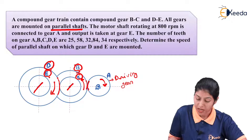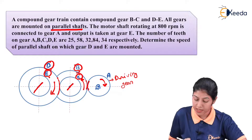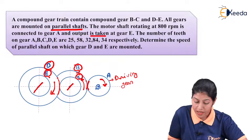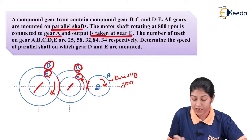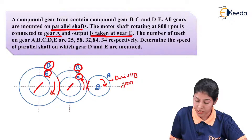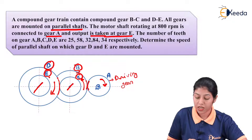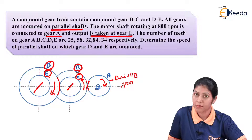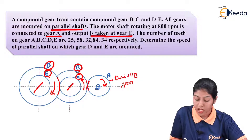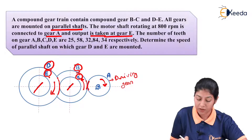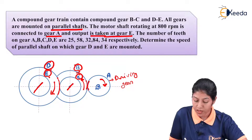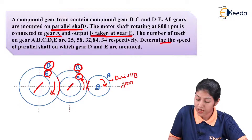The number of teeth of gear A, B, C, D and E is given. The driving gear is gear A and the driven gear is gear E. Number of teeth: TA = 25, TB = 58, TC = 32, TD = 84, TE = 34. We have to determine the speed of the parallel shaft on which gear D and gear E are mounted, which is equivalent to the speed of gear D and gear E since both are mounted on the same shaft.